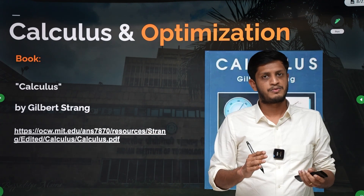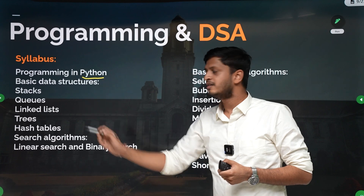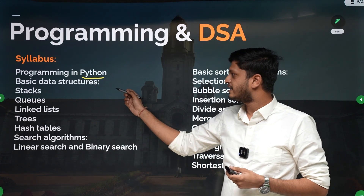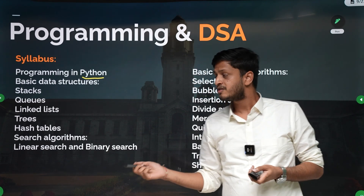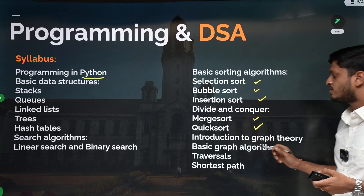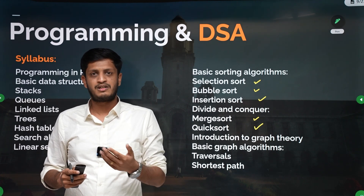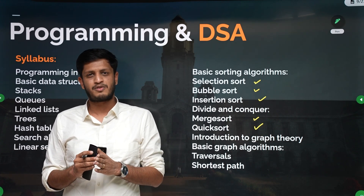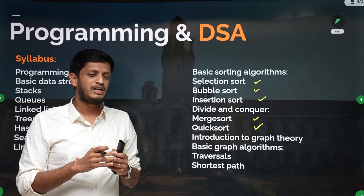Note carefully that in GATE DA the programming is in Python — no questions have been asked for C or C++ in recent years. You have basic data structures: stacks, queues, linked lists, trees, and hash tables. Search algorithms include linear and binary search, and sorting algorithms include selection, bubble, insertion, merge sort, and quick sort. In GATE CS there are more DSA topics like dynamic programming, but in GATE DA no DP questions have been asked in the last two years.